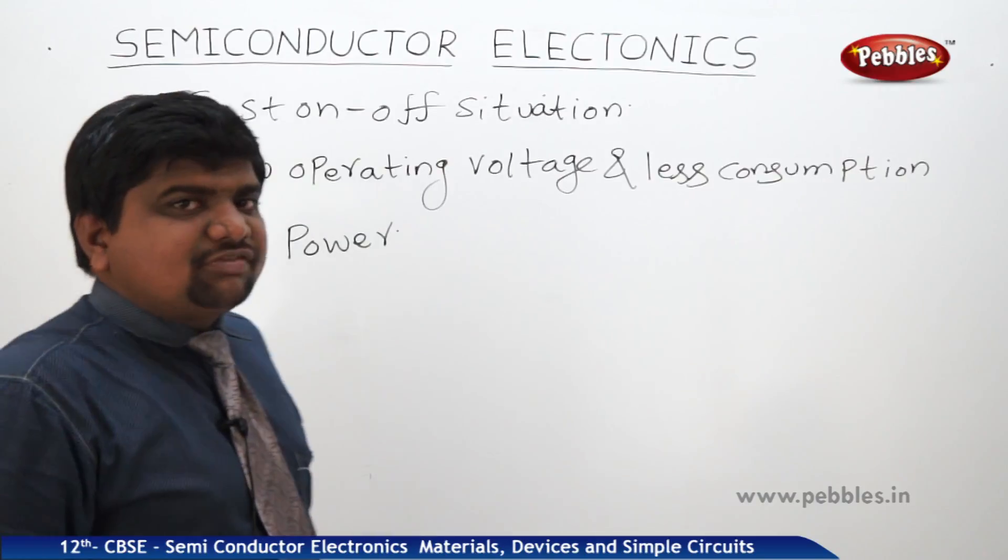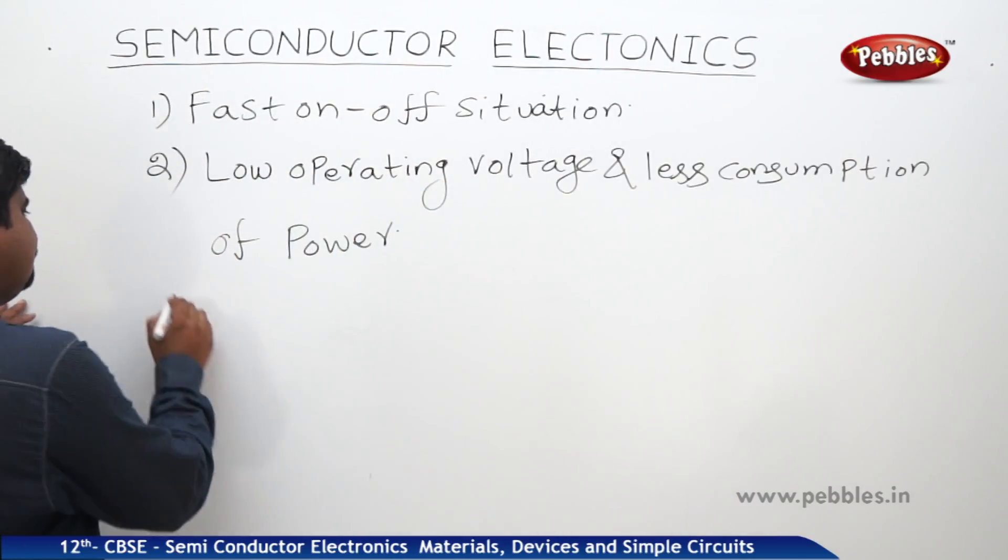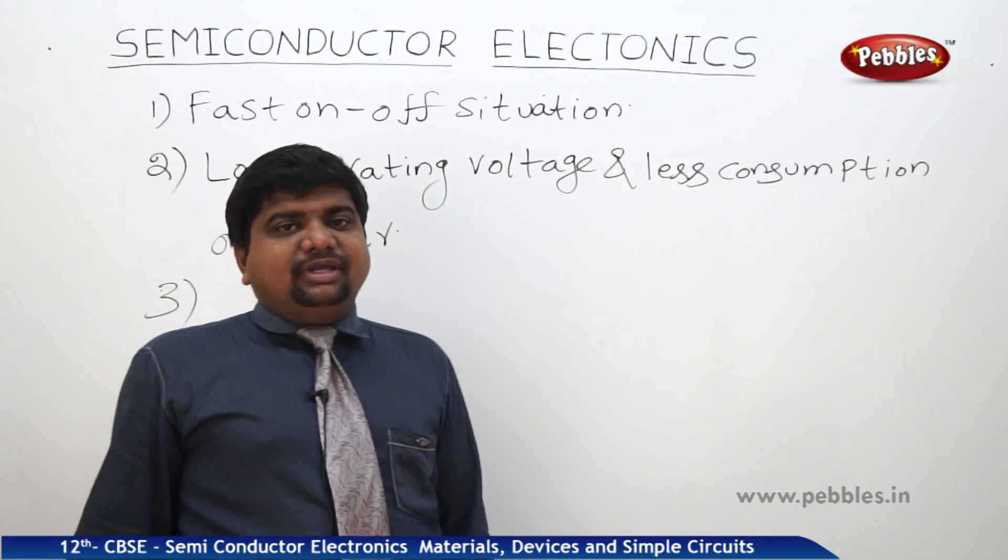So we know that P is equal to V square R, so such like that we can say this thing. V square by R. Where P is equal to I square R, where I is equal to V by R.